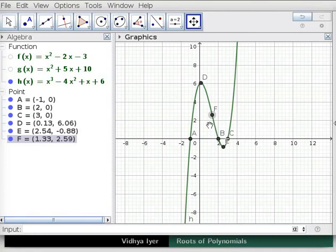Correlate the degree of the polynomials and the number of roots seen so far. Observe that functions entered in CAS appear in algebra and graphics views. Functions entered in input bar appear in algebra and graphics views but not in CAS view.